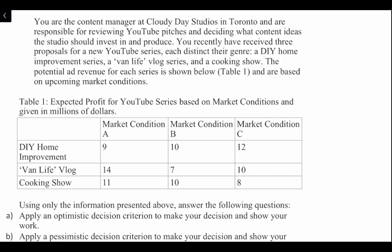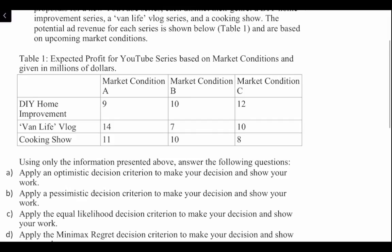Here's our question — let's dive right in. You are the content manager at Cloudy Day Studio in Toronto and are responsible for reviewing YouTube pitches and deciding what content ideas the studio should invest in and produce. You recently received three proposals for a new YouTube series, each distinct in their genre: a DIY home improvement series, a van life vlog series, and a cooking show. The potential ad revenue for each series is shown in Table 1.